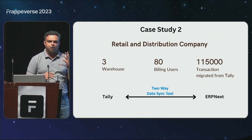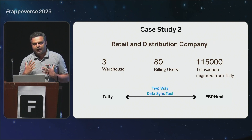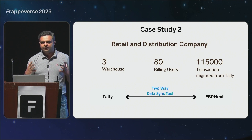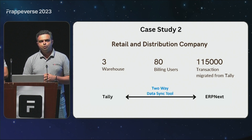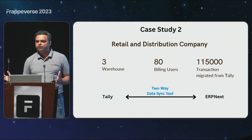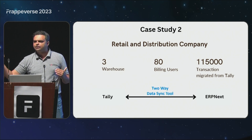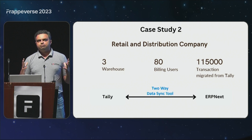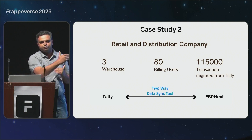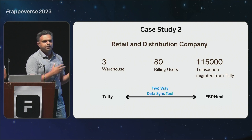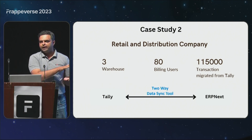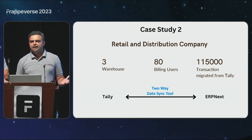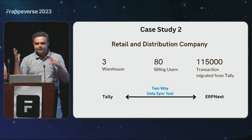The next case study is also very unique. At any given point of time they have 60 to 80 people doing billing — they are a very large distributor of white goods components. Just imagine 60 to 80 people doing billing daily across multiple locations. Going live on one day was very difficult because the majority of their offices are in C class or D class towns. So we had to build a two-way data integration tool to give them a phase-wise go-live. For about three months, simultaneous entries were happening in both ERPNext and Tally, and both were synced and merged.